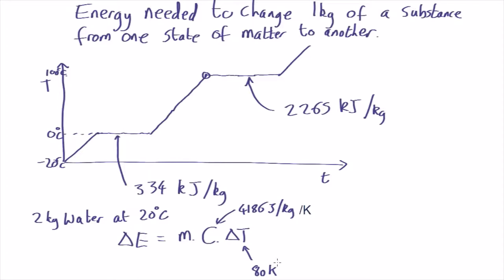But then once it's got to water at 100 degrees you have to turn it into steam at 100 degrees, and that's going to need the latent heat. So we now need to add the mass times the latent heat, which is this 2265000 joules per kilogram.